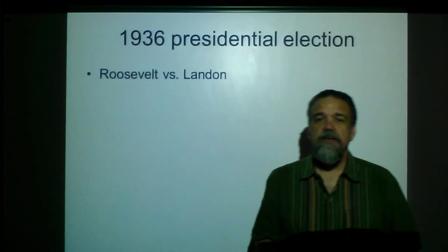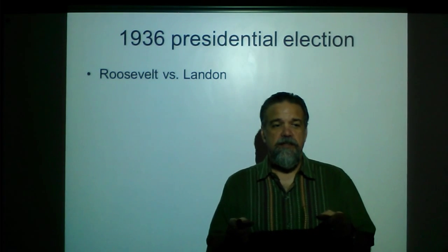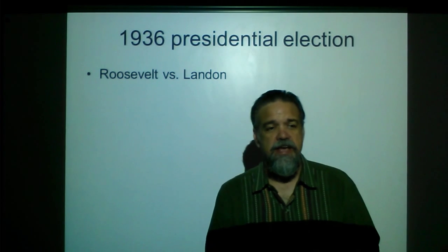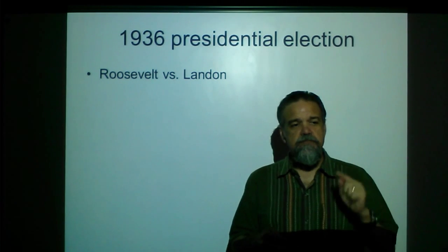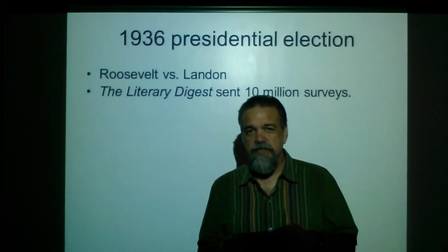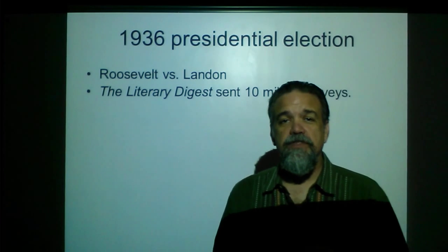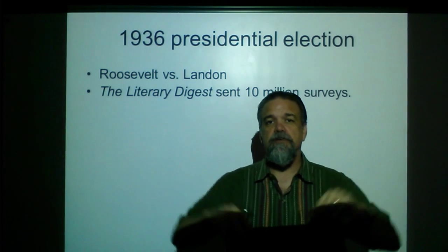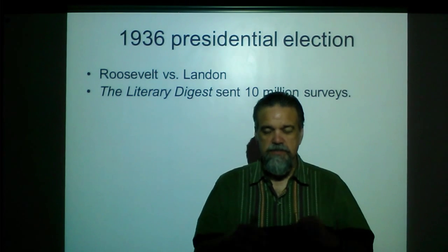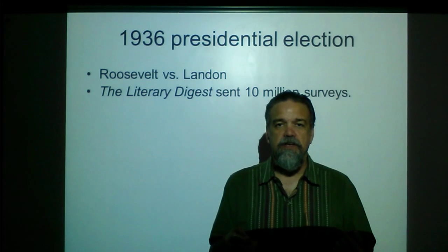Story number one. It's 1936 and there's a presidential election going on between Franklin Roosevelt and Alfred Landon. There was this magazine back then called the Literary Digest, and they were really good at predicting elections. What they would do is send out surveys, get them back, look at the results, and predict who was going to win.